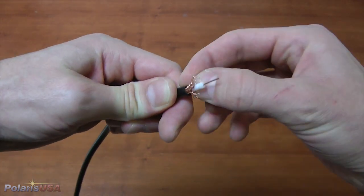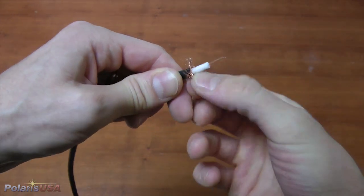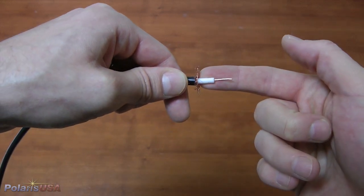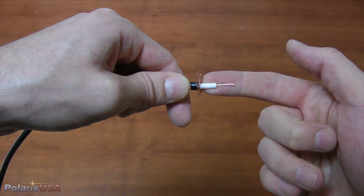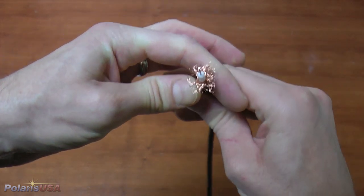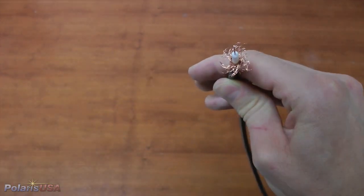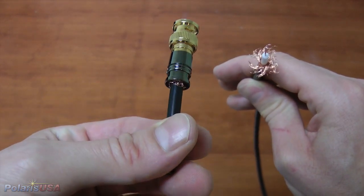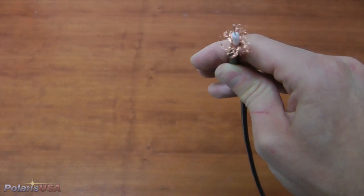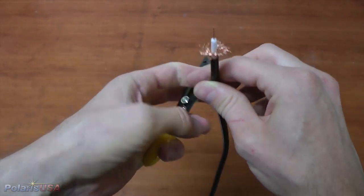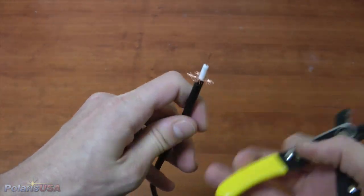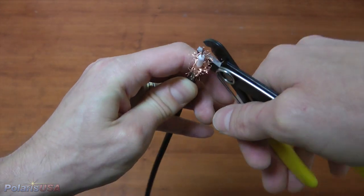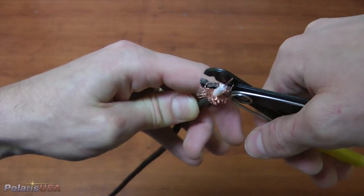As I peel back the outer braided shielding, take note of the lengths of the core and inner insulation, each of which should be just shy of half an inch. I am also going to trim some of the outer braided shielding to avoid having excess, which makes a connector that looks like this.